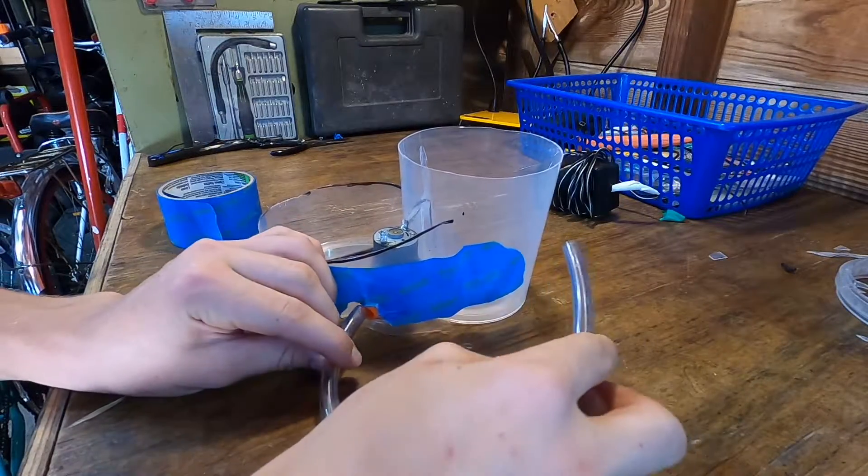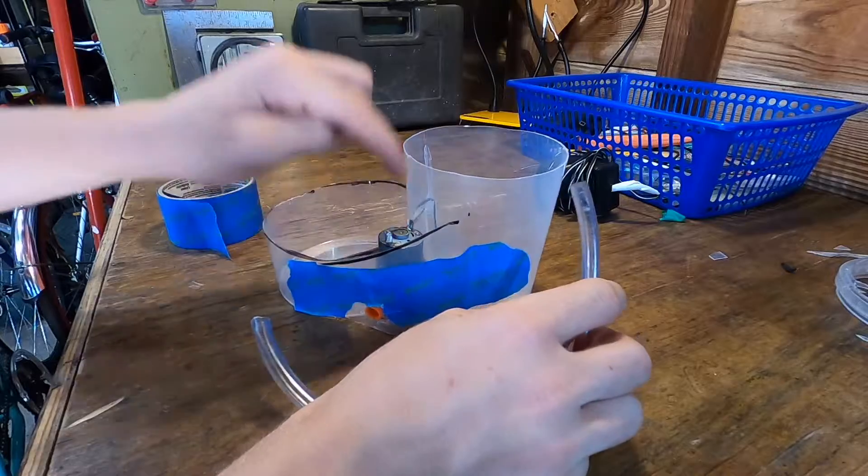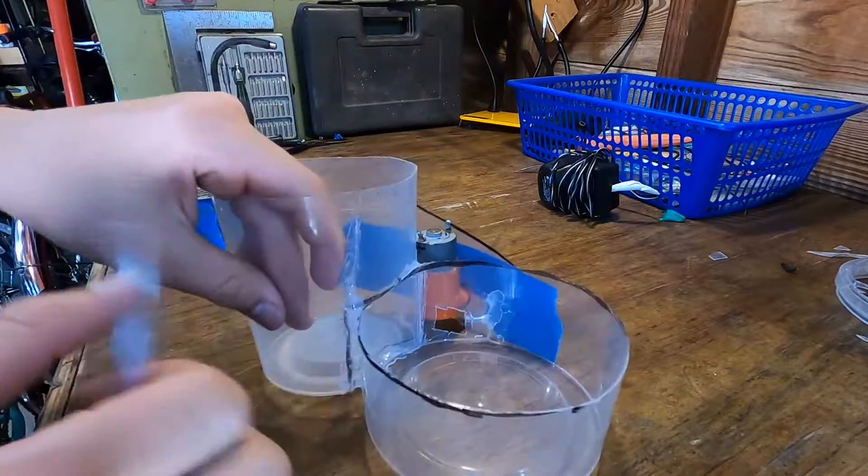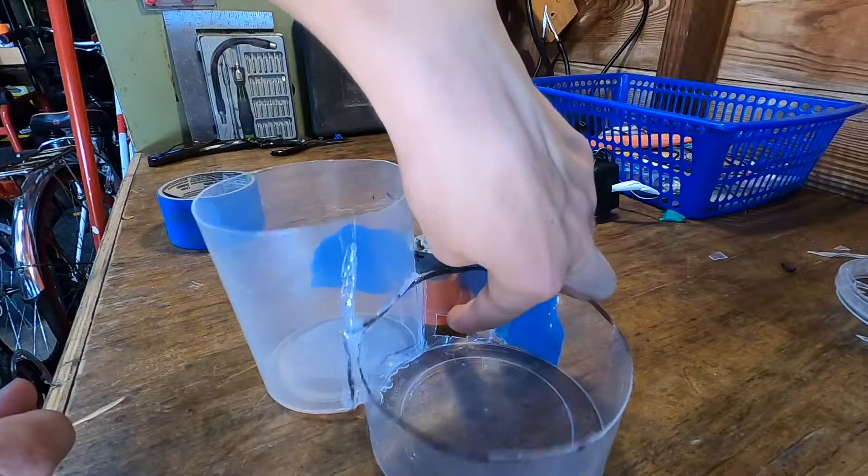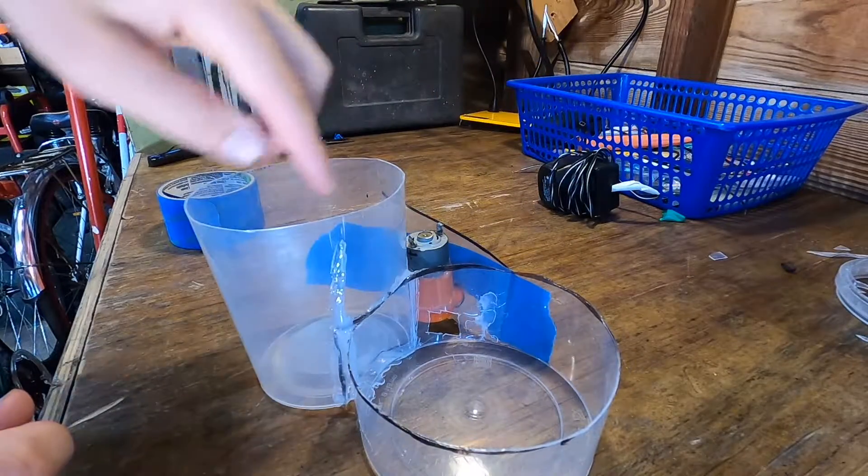And then we've got this tube here. And this will just put the water from this bottom container to the top. And you can see there's a hole here which is going to let the water go from here into the pump. And then the pump will send it back up in here.